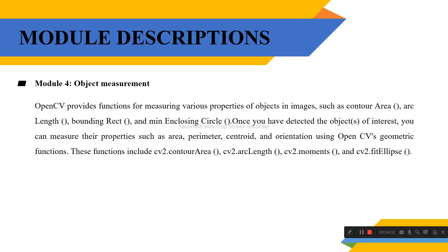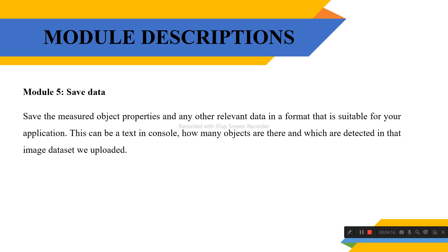Object measurement: OpenCV also provides functions for object measurement. You can measure properties such as area, perimeter, centroid, and orientation using OpenCV's geometric functions. Save data: this module saves the measured object properties and other relevant data suitable for the application.